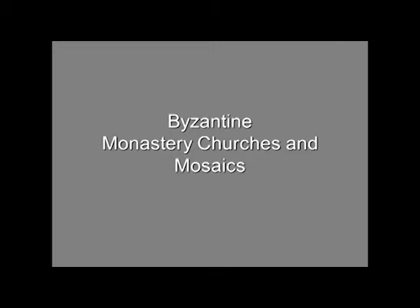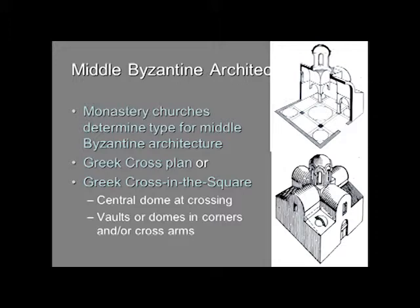We're going to talk about Middle Byzantine monastery churches and the mosaics that decorate them. With Middle Byzantine architecture, the monastery churches are what we look to to determine the type of architecture. They generally are centralized churches, very frequently with either a Greek cross plan — a cross with equal arms both ways — or what they call a cross in the square, meaning a Greek cross with the corners filled in. You'll have a central dome at the crossing and then either vaults or domes in the corners or in the cross arms.